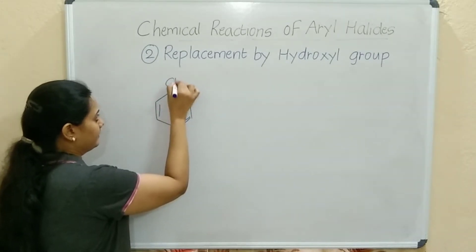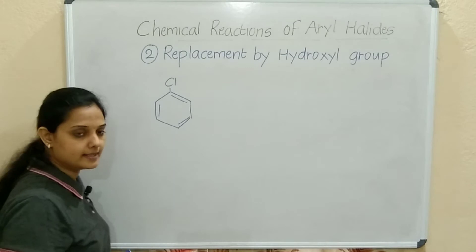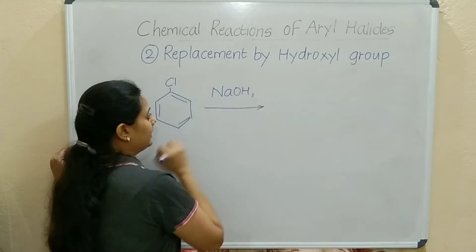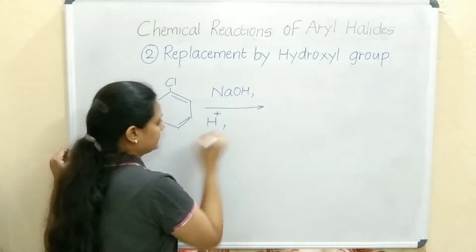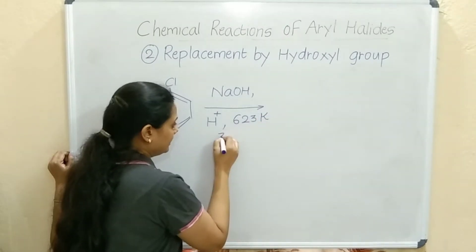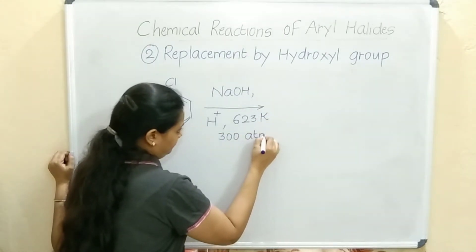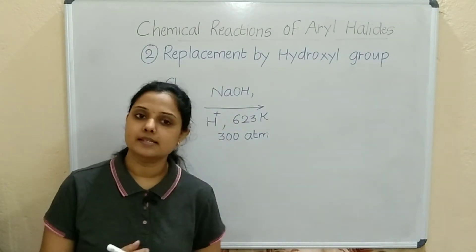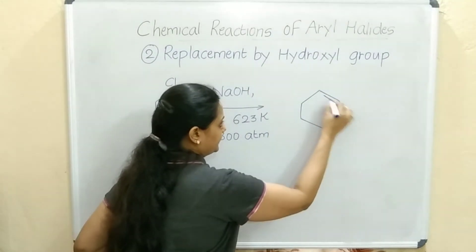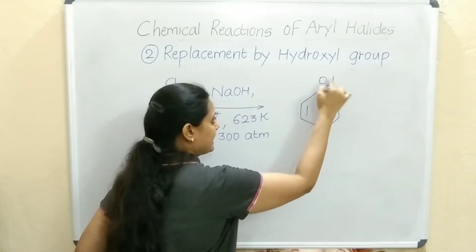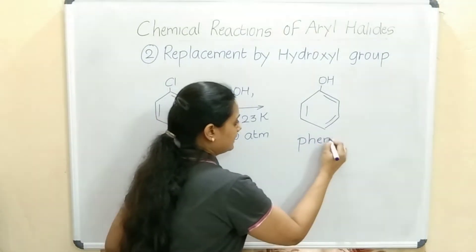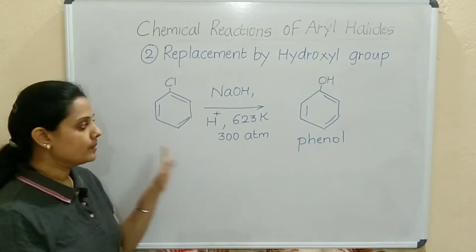We are talking of aryl halides. Chlorobenzene in the presence of sodium hydroxide and in the presence of an acid, at 623 Kelvin temperature and 300 atmospheric pressure — at these conditions, chlorobenzene is converted: the Cl is replaced by OH group. OH attached to the benzene ring gives phenol. So this is the conversion of chlorobenzene to phenol.